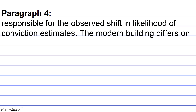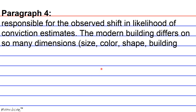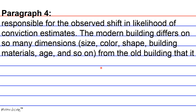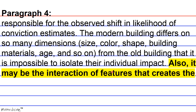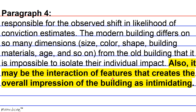It remains unclear exactly which architectural features are responsible for the observed shift in likelihood of conviction estimates. The modern building differs on so many dimensions — size, color, shape, building materials, age, and so on — from the old building that it is impossible to isolate their individual impact. Also, it may be the interaction of features that creates the overall impression of the building as intimidating.